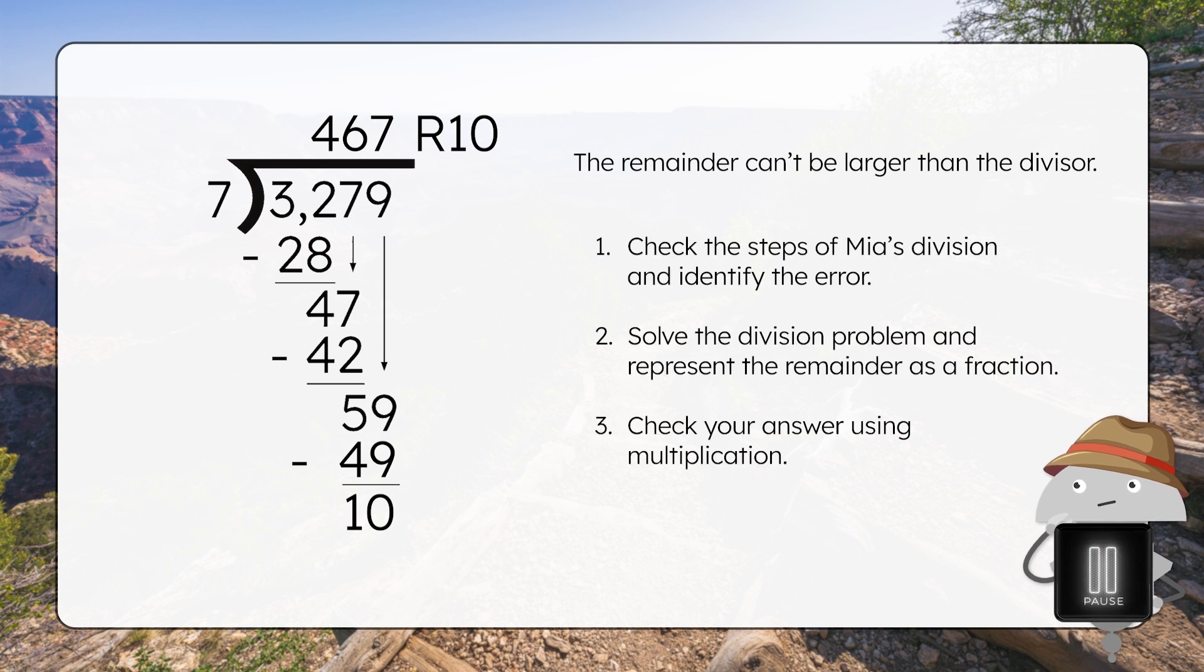Pause the video here to check the steps of Mia's division and identify the error. Then solve the division problem yourself, representing the remainder as a fraction. And then check your answer using multiplication. Alright, let's go through it step by step.